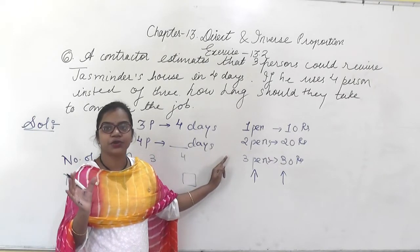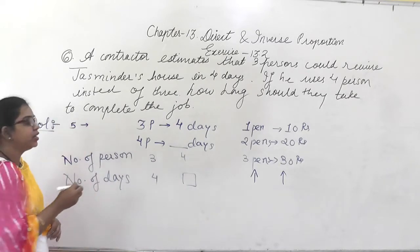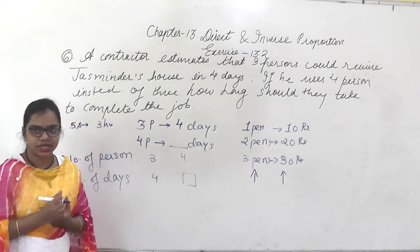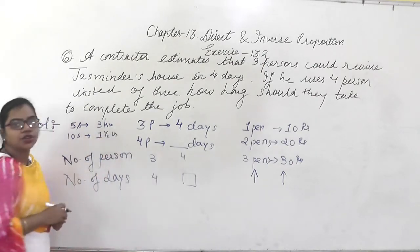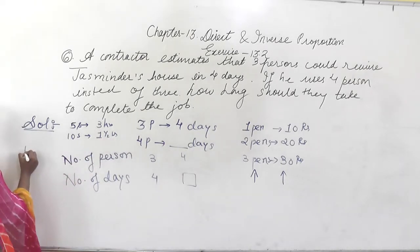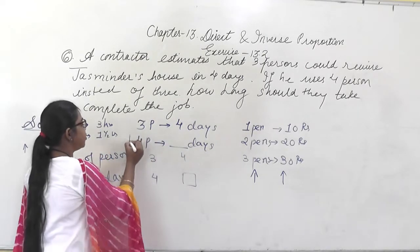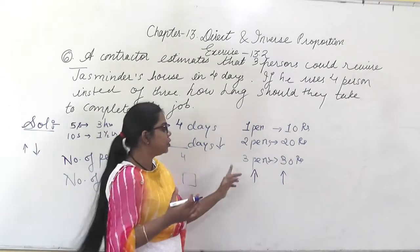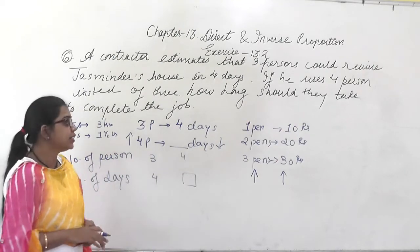For example, if 5 students are given a work and they take 3 hours to complete it, if I increase to 10 students, they might finish in 1 and a half hours. So as the number of persons increases, the time will decrease. Here, the number of persons is increasing from 3 to 4, so the number of days will decrease. In inverse proportion, if one is increasing, the other decreases. So this is in inverse proportion.